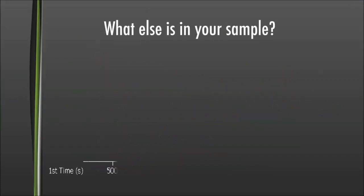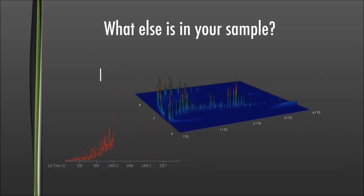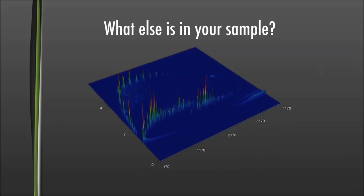What else is in your sample? Is it important? GC by GC makes it easy to see what's hidden in your sample. A second dimension of chromatography separates coelution very clearly.